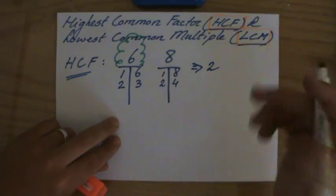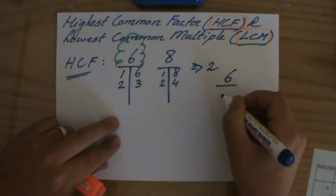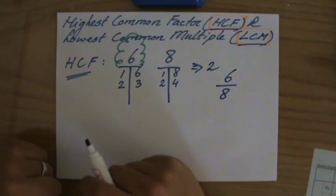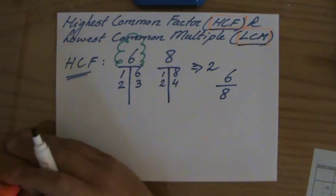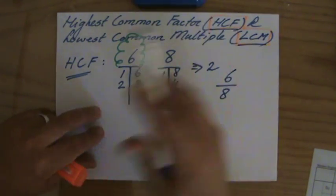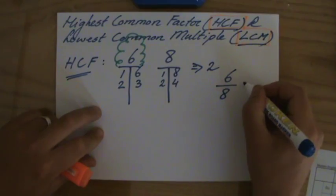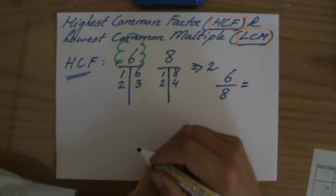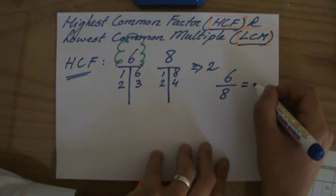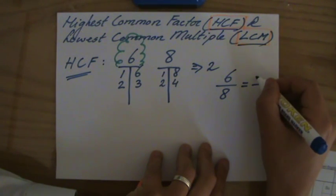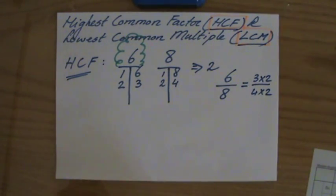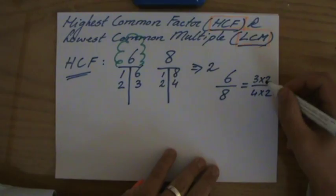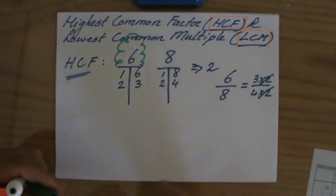When is that important? For instance, if you're given the fraction 6 over 8 and need to simplify it. Simplifying a fraction means taking out the HCF — the highest common factor. Six is 3 times 2, and eight is 4 times 2, so 6 over 8 simplifies to 3 over 4 by taking that highest common factor of 2 out.